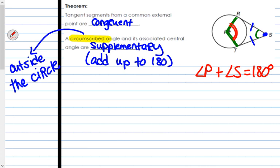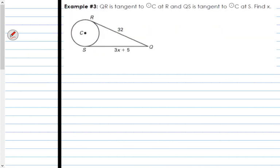Let's do a couple of examples. Example three. QR is tangent to circle C at R, and QS is tangent to circle C at S. Find X. Well, since QR is a tangent and QS is a tangent, and they both originate from the same point outside of the circle, which is Q, that means the two tangents are congruent. So, 32 is equal to 3X plus 5 because QR is equal to QS.